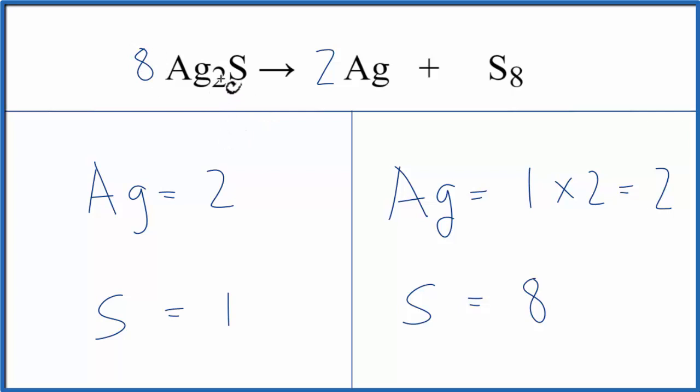So now, two times eight equals 16, so our silvers are off, but one times the eight equals eight, because this eight goes to everything. So the sulfur's fine.